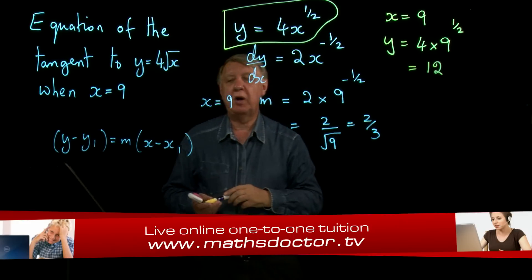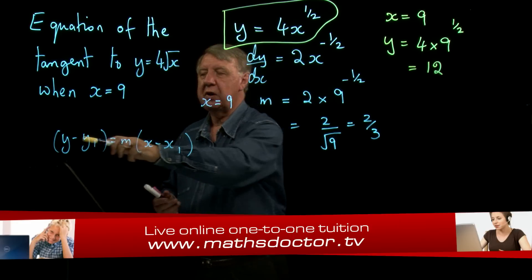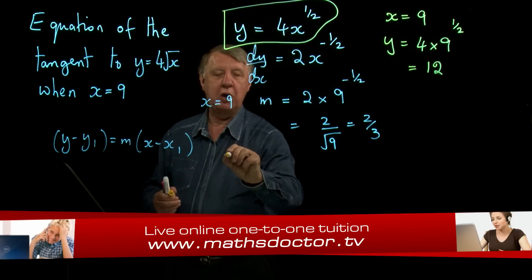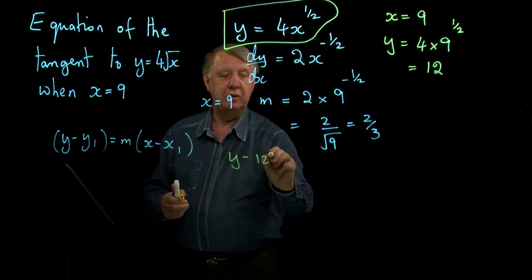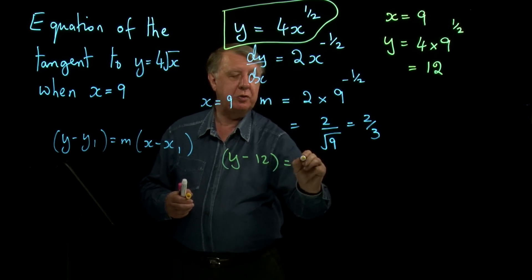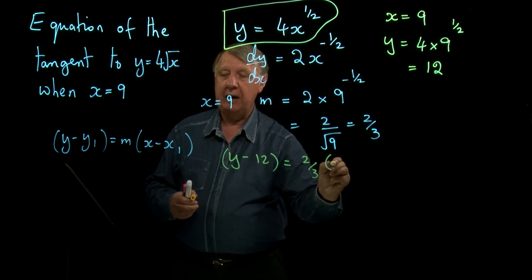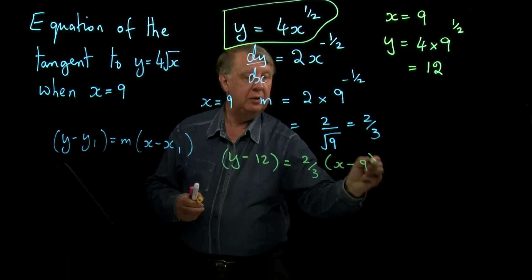So that's my y1, so I can now go straight to the formula: y minus 12 equals m, which is two-thirds, times x take away nine.